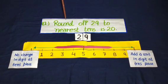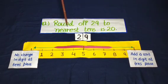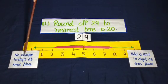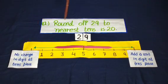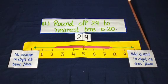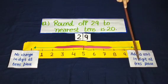When we do rounding to the nearest tens, look at the digit at the ones place. If the digit is 4, 3, 2, or 1 at the ones place, no change in the digit at the tens place. If the digit is 5, 6, 7, 8, or 9 at the ones place, add a unit to the digit at the tens place.